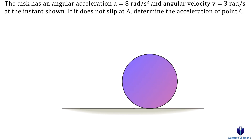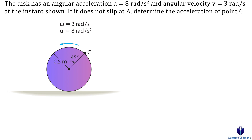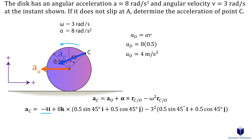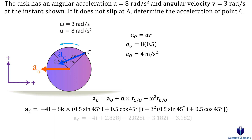In this problem we need to determine the acceleration of point C. The first step is to find the acceleration at the center of the disk by multiplying the angular acceleration by the radius. Then we use the relative acceleration equation to find the acceleration at point C. Let's draw a free body diagram of the disk with the acceleration vector, taking up and to the right as positive. The acceleration at the center points straight ahead along the negative x-axis. The angular acceleration is counterclockwise, so it's along the positive z-axis, cross-multiplied with the position vector from center to C written in Cartesian form using the 45-degree angle. Then we add the angular velocity term multiplied by the position vector.